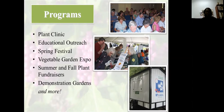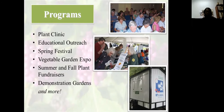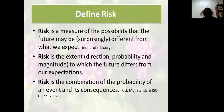We have a plant clinic that sees about 4,500 customers each year through calls or walk-ins. Educational outreach is our speakers bureau where we go out and do talks in the community. We also have a spring festival with about 8,000 to 8,500 residents visiting our two-day event, held the second weekend of March. We have a vegetable garden expo in the fall, two plant sales, and demonstration gardens. With all these activities, there are risks associated with them.